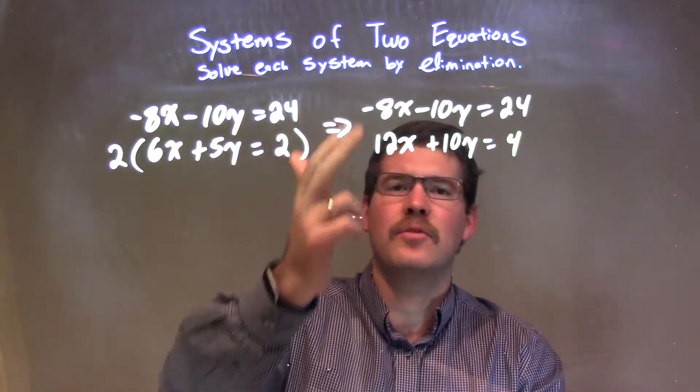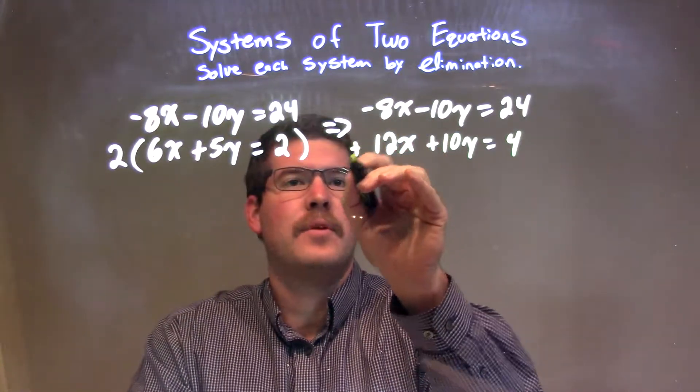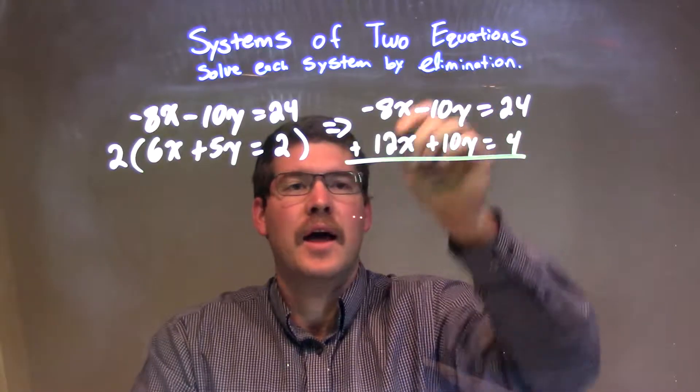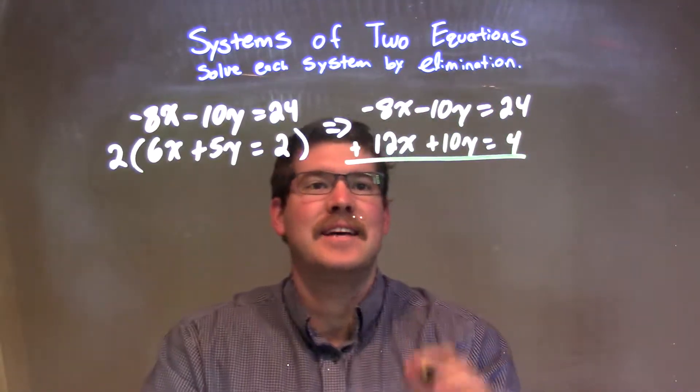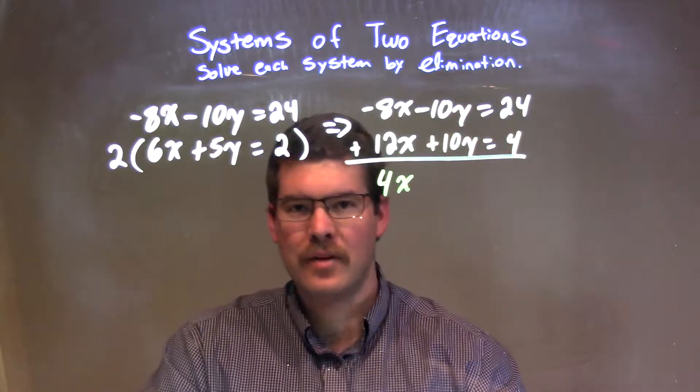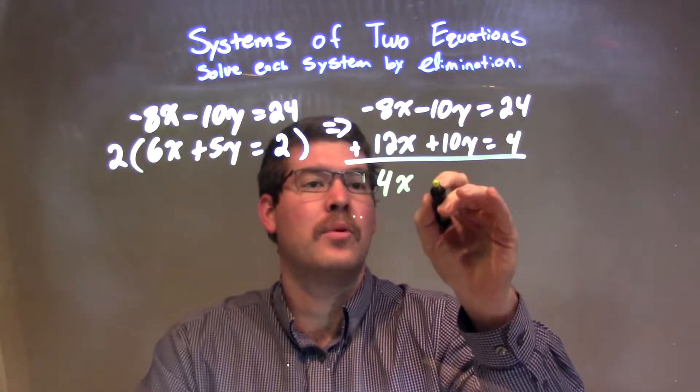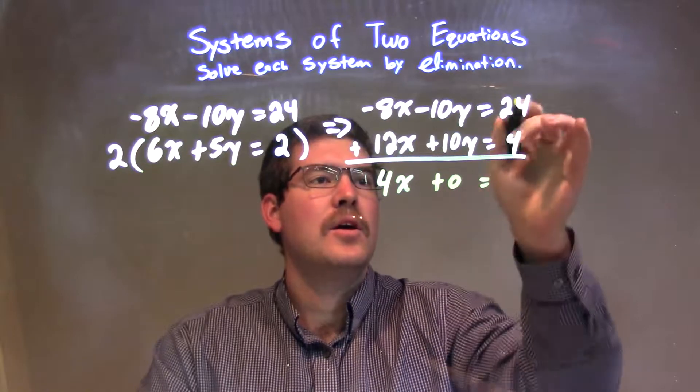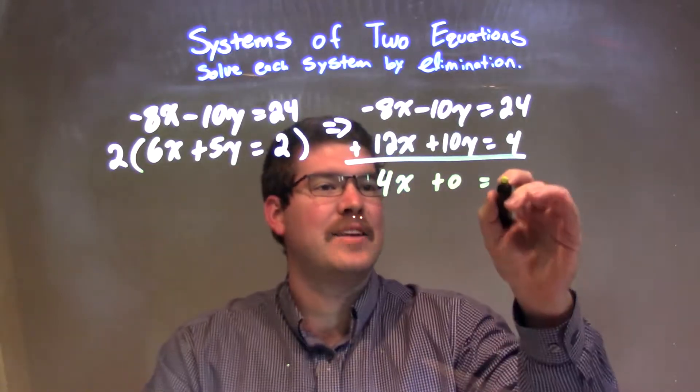From there, I'm going to add these two equations together, top to bottom. Negative 8x plus 12x is positive 4x, and negative 10y plus positive 10y should eliminate, the 0. 24 plus 4 is 28.